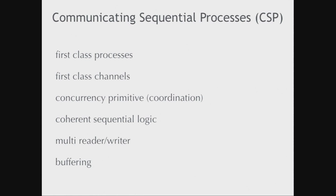It creates a simultaneity point between two different processes. In order for me to produce something, you have to be ready to consume it. Using these tools, we're going to be able to write programs that in their aggregate effect are complex and asynchronous, but locally we can reason about them because the individual machines are sequential. All of that logic is going to be linear and it's going to read as if it was all going to run sequentially. You compose your system out of lots of little sequential things which are easy to write, easy to test, easy to reason about.